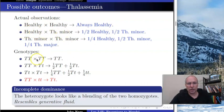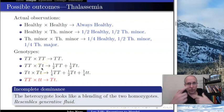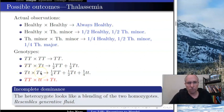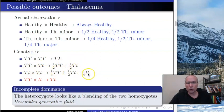For TT crossed with Tt: the TT parent can only give a big T; the Tt parent gives a big T half the time and a little t half the time. So half the offspring are TT (healthy) and half are Tt (thalassemia minor). For Tt crossed with Tt: each parent gives big T or little t with equal probability. A quarter of the time offspring are TT (healthy), a quarter are tt (thalassemia major), and half the time one parent contributes big T and the other little t — giving Tt (thalassemia minor).